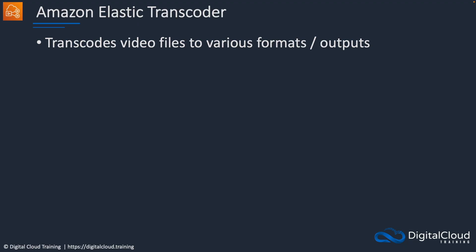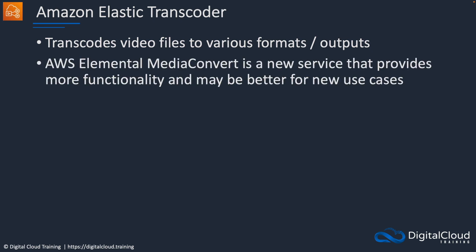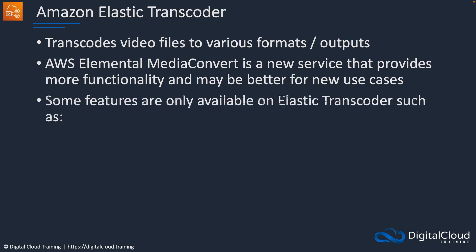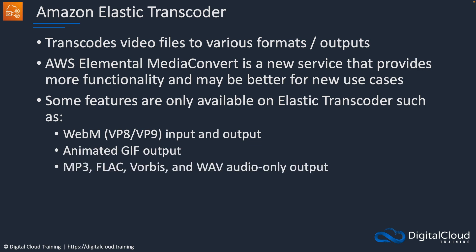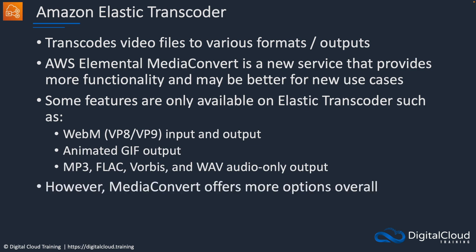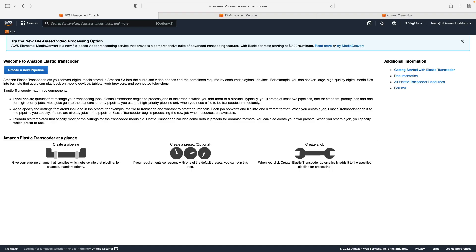Elastic Transcoder is for transcoding video files — you can take a video file from one format and output it to various other formats. There's another service called Elemental Media Convert that's newer and provides more functionality, which might be better for new use cases. However, some features are only available in Transcoder: WebM VP8/VP9 input and output, animated GIF output, and MP3, FLAC, Vorbis, and WAV audio-only output. For many use cases Media Convert will give you more options, and AWS appears to be pushing in that direction.